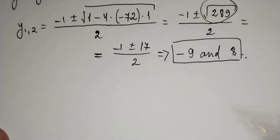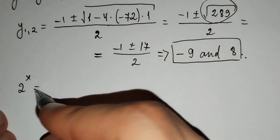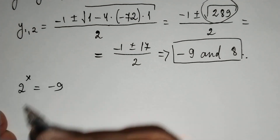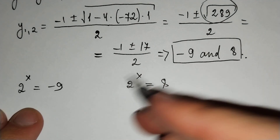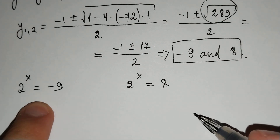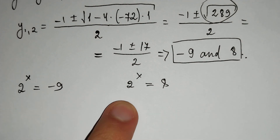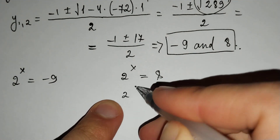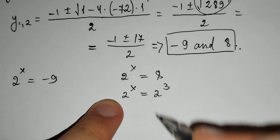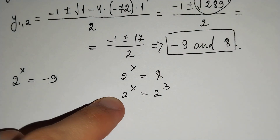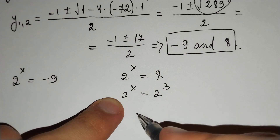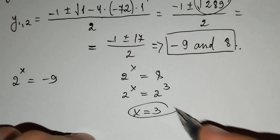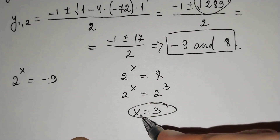So y = 2^x = −9 or 2^x = 8. The second one is easier, so let's solve it first. 2^x = 2^3, and since the bases are the same, the exponents must be equal. Therefore x = 3 is our first solution.